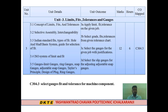Topic 3.4 is the ISO system of Limits and Fits. Topic 3.5 is Gauges. Gauges are instruments used in manufacturing that allow us to check readings easily. Using a gauge, we can decide whether a component is acceptable — OK or not OK. Gauges are helpful in this decision.